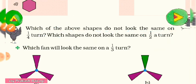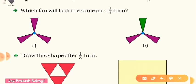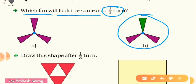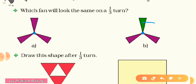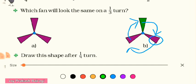Now we have a question about one third turn. What is one third turn? Look at this fan with three blades — the first one is green and another two are maroon. In one third right turn, the green blade will move here, and the maroon blades will shift accordingly.